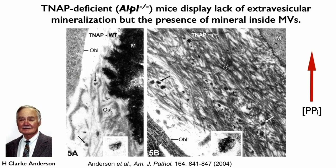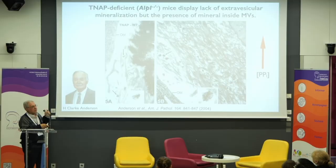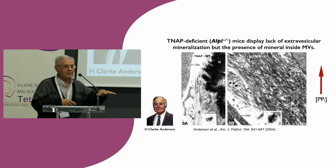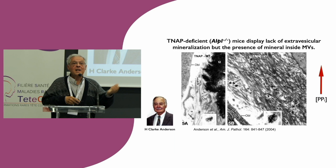With Clark Anderson, the co-discoverer of matrix vesicles, we found that in alkaline phosphatase knockout matrix vesicles, you still have mineral inside the vesicles but lack mineralization in the extracellular matrix. So it is really propagation of mineralization that is defective, not initiation.